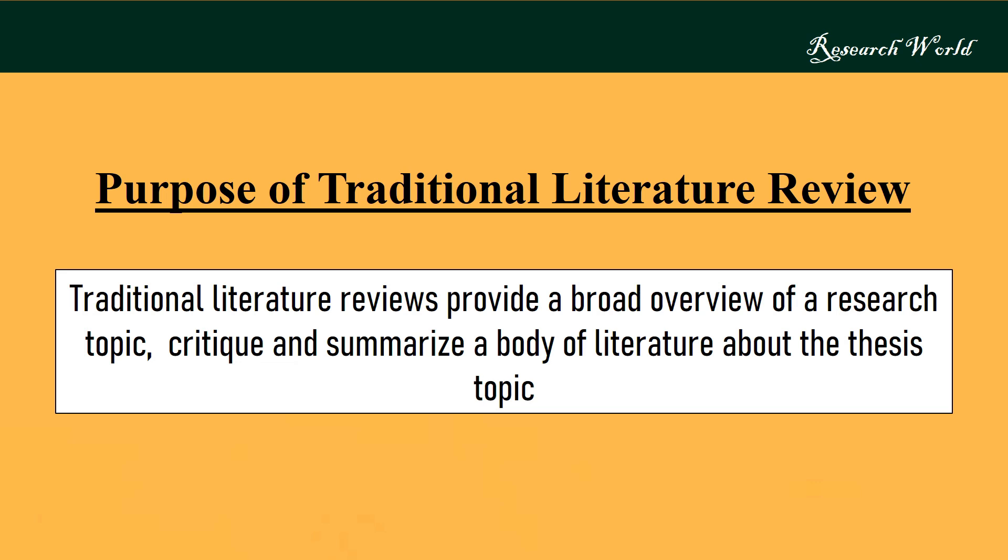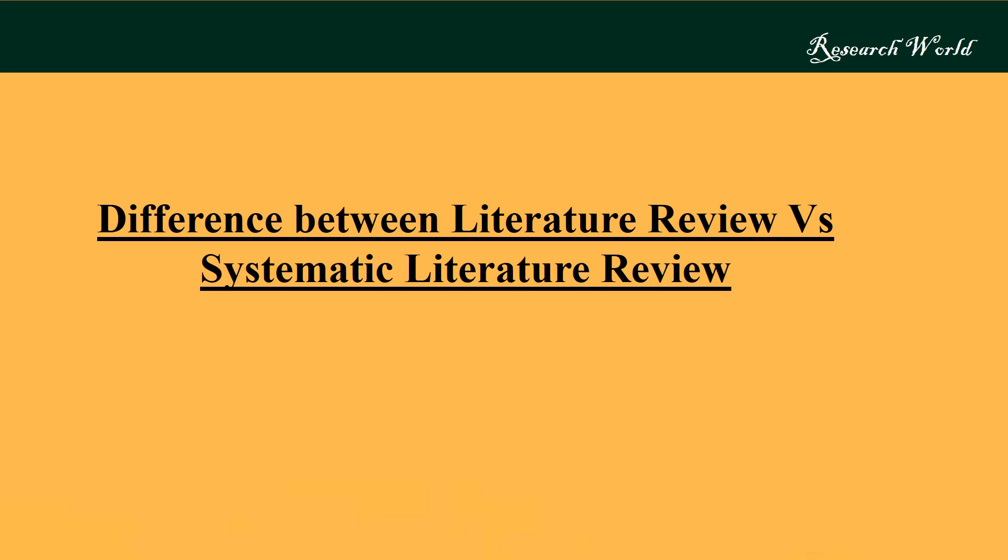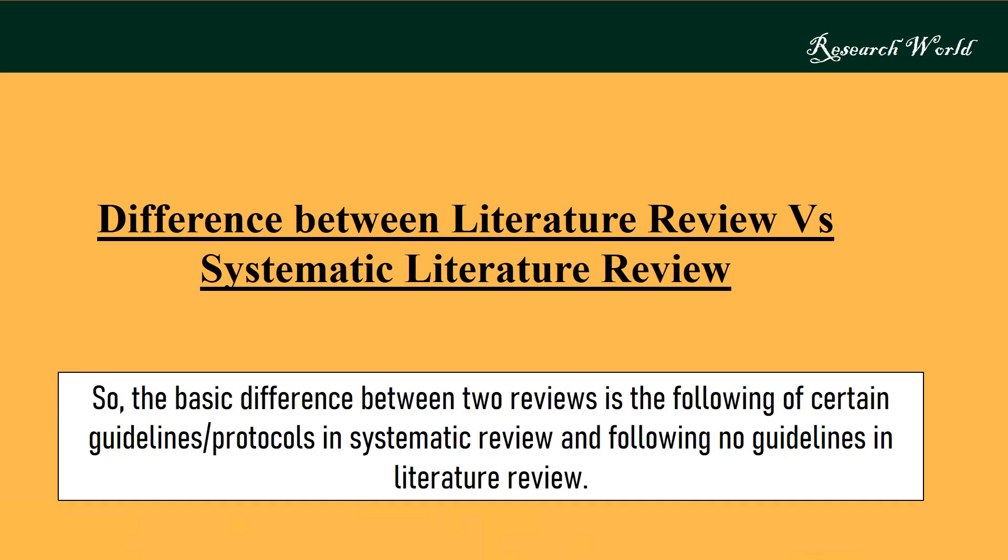Traditional literature reviews provide a broad overview of a research topic, critique, and summarize a body of literature about the thesis topic. So the basic difference between the two reviews is the following of certain predefined guidelines and protocols in systematic review, and no such guidelines in a traditional literature review.